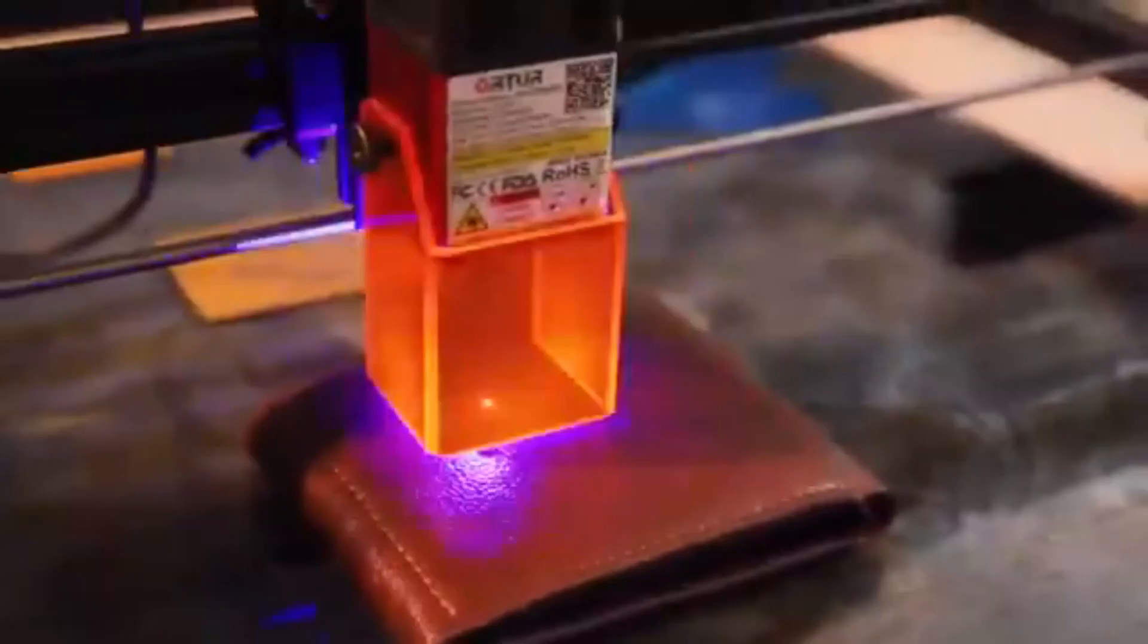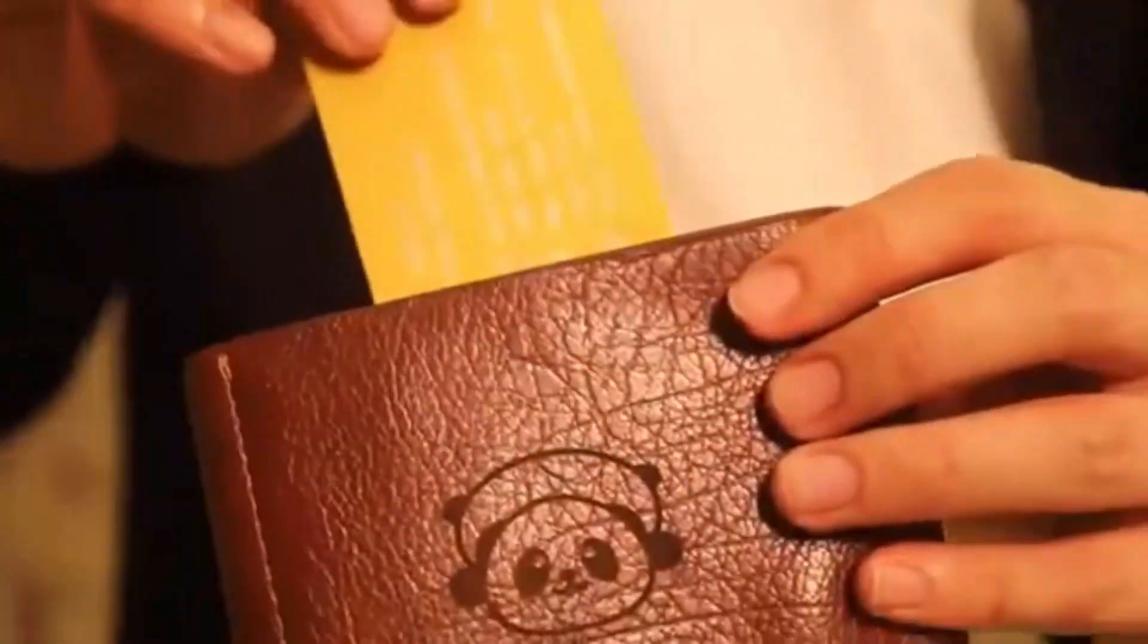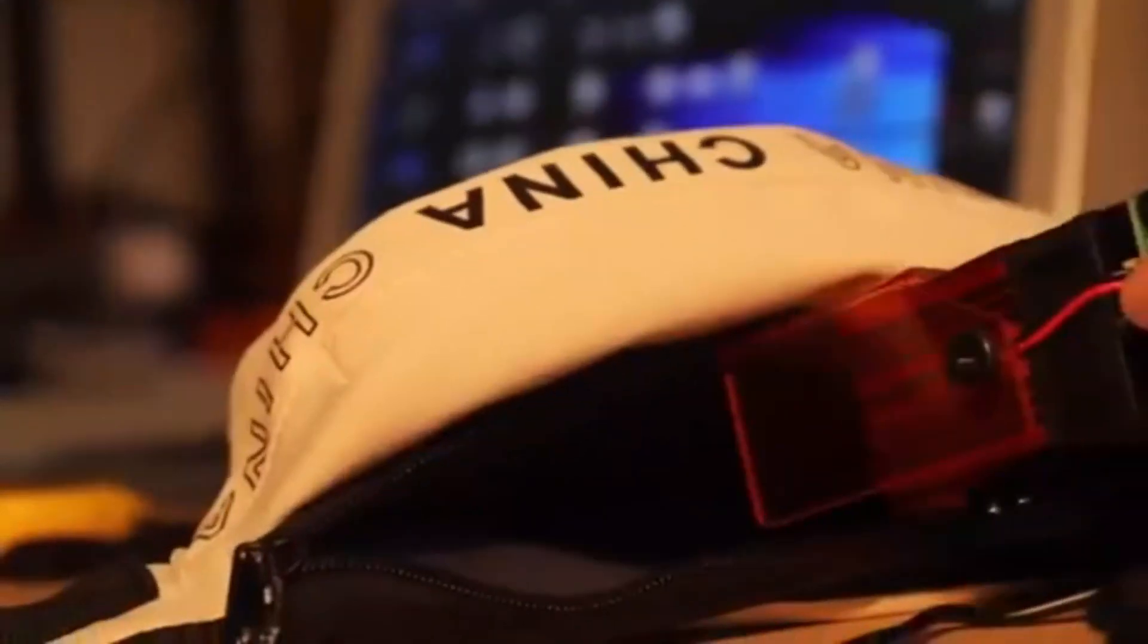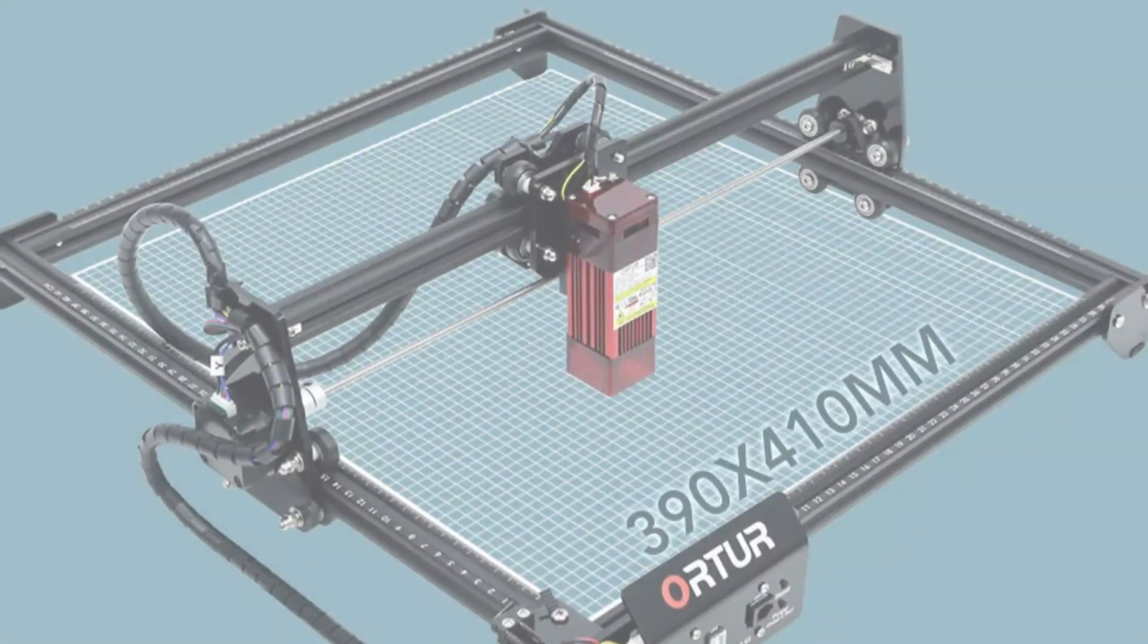It offers a wide engraving speed range from 0 to 15,000 mm/min, allowing users to adjust the speed according to their project requirements. The engraver supports a variety of materials, including wood, paperboard, acrylic, and craft paper, making it suitable for diverse projects.